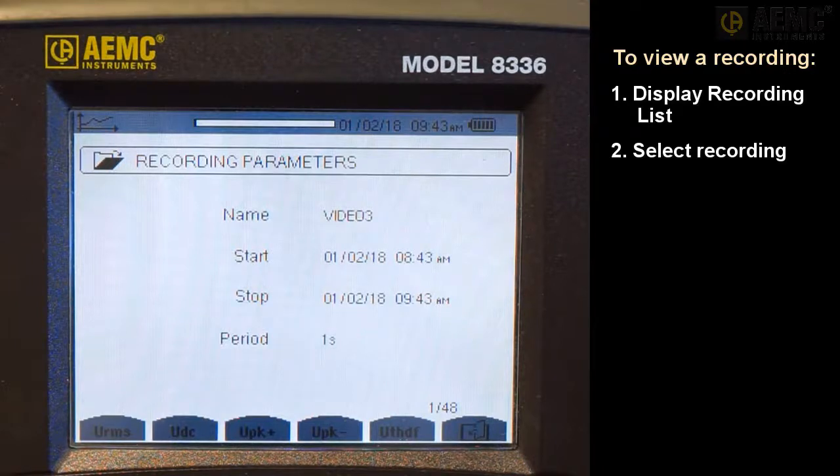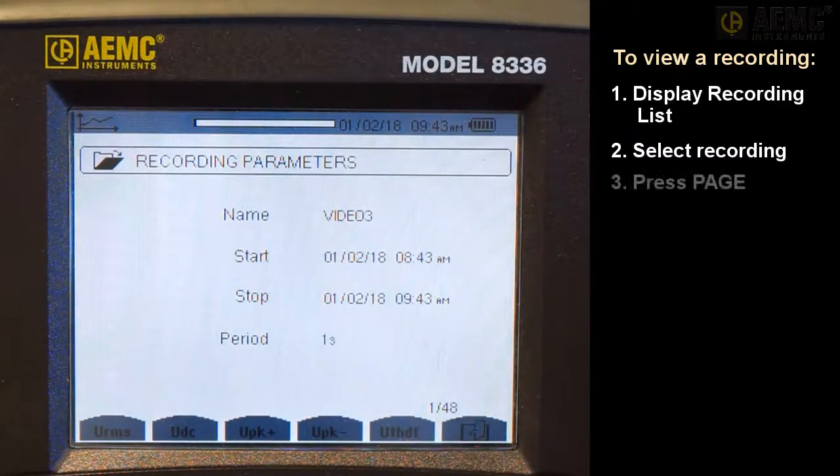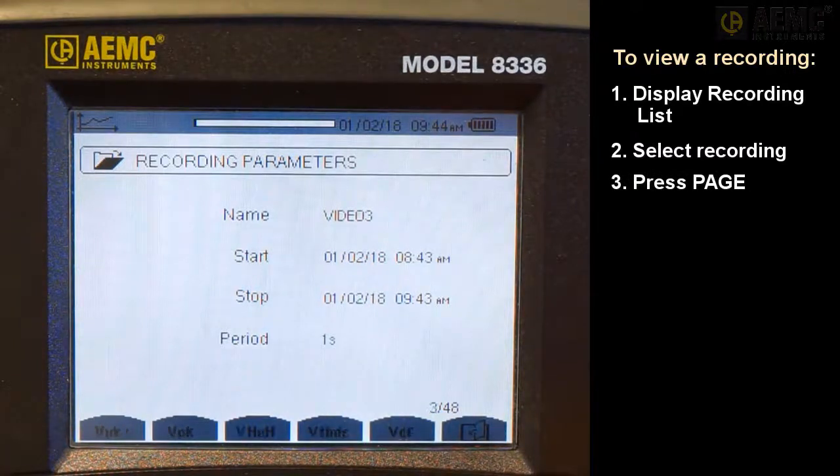In the lower right corner is the page number, which in this example indicates we are looking at the first page of a 48-page recording. The number of pages is determined by the number of quantities selected in the Trend Configuration screen. Press the Page Function button on the far right to cycle through the pages. As you do this, the remaining Function buttons refresh, to correspond with the data contained on the selected page.